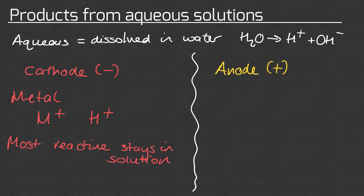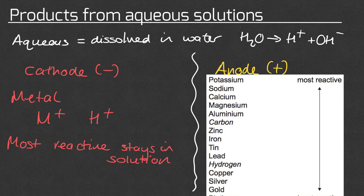Depending on the exam question, you might be given the reactivity series and asked to use it to decide what is made and what stays in solution, or the question might tell you what is made and you need to use that to determine which is the most reactive. You do not need to learn the reactivity series — if a question requires you to know what's more reactive you'll be given it. The reactivity series is a list of metals with the most reactive at the top and the least reactive at the bottom.